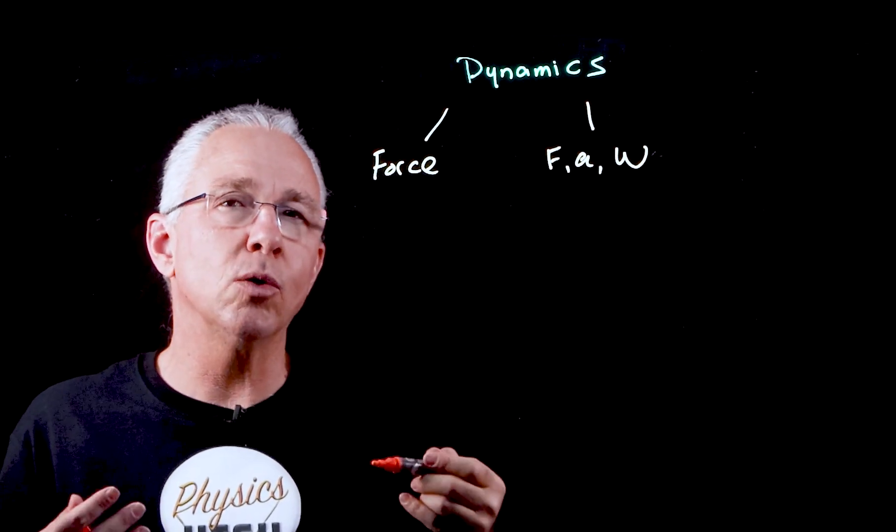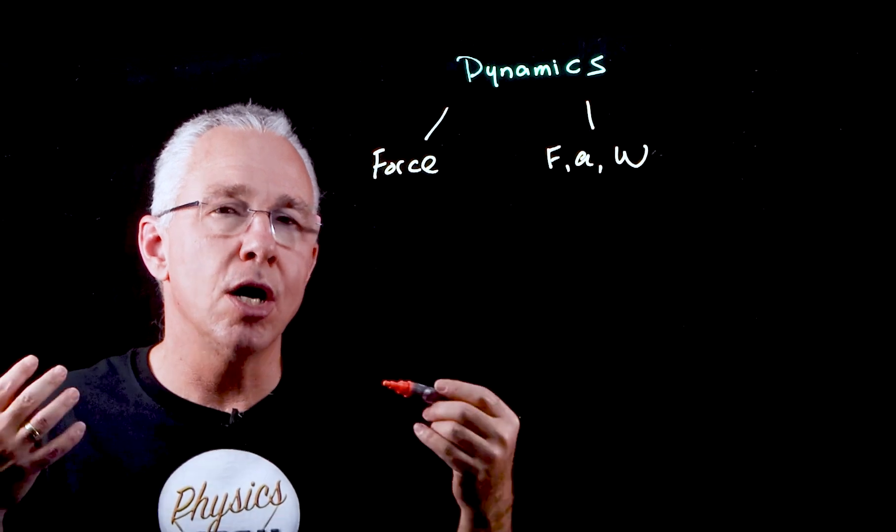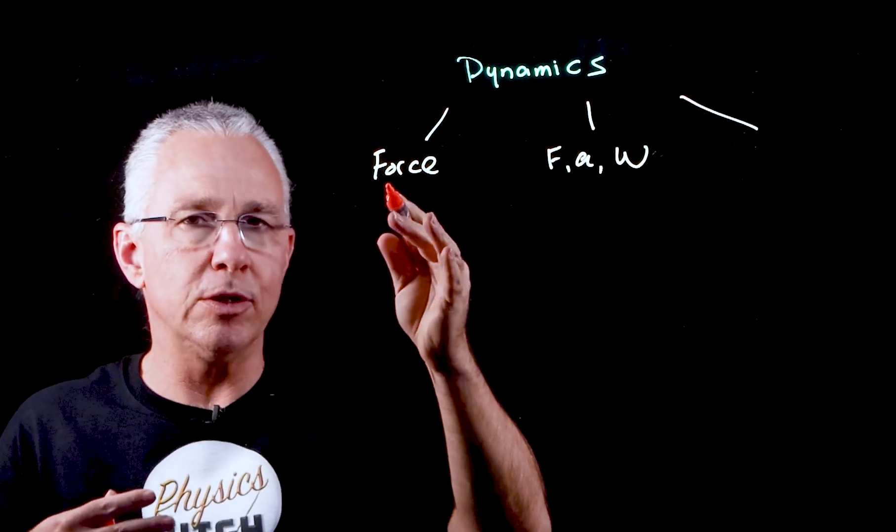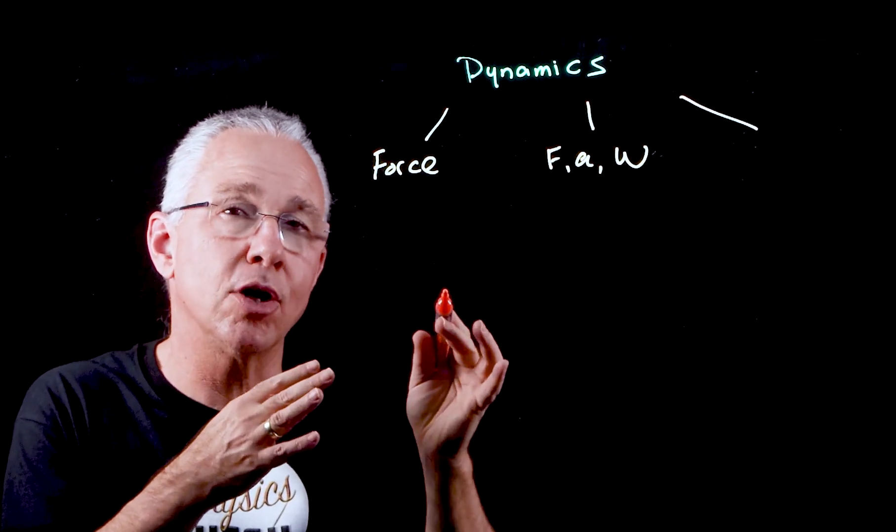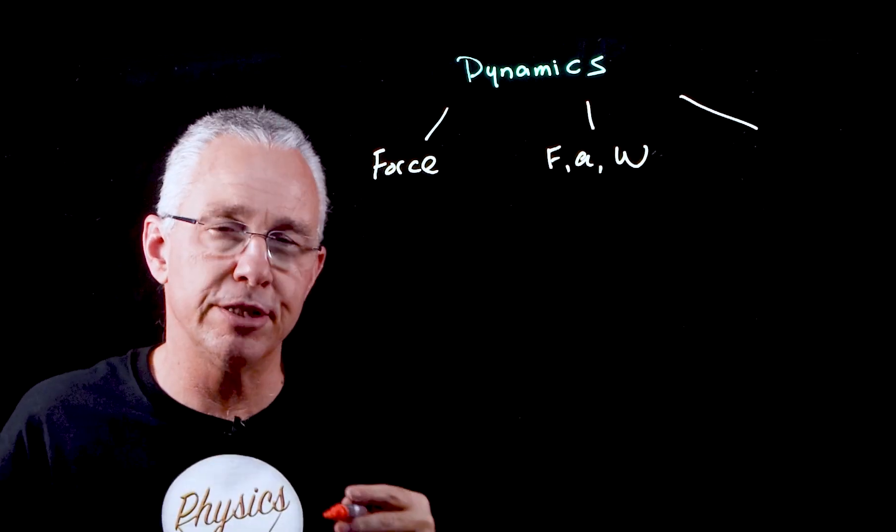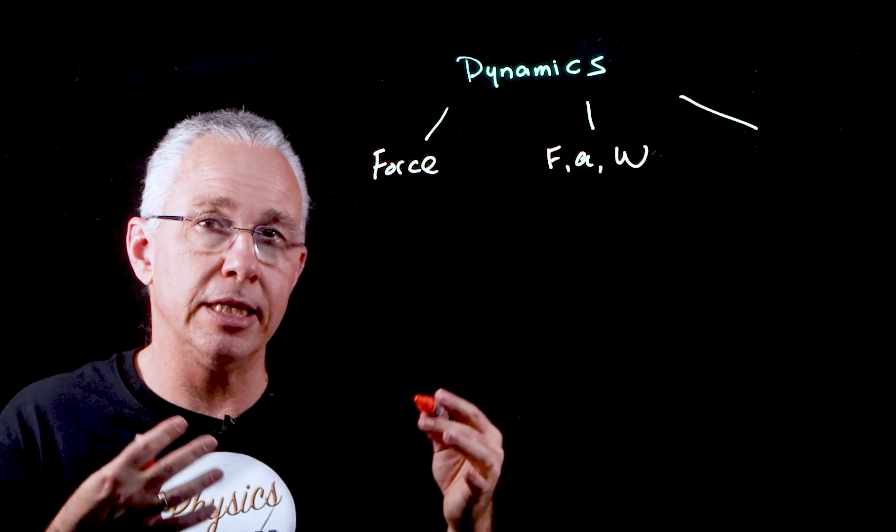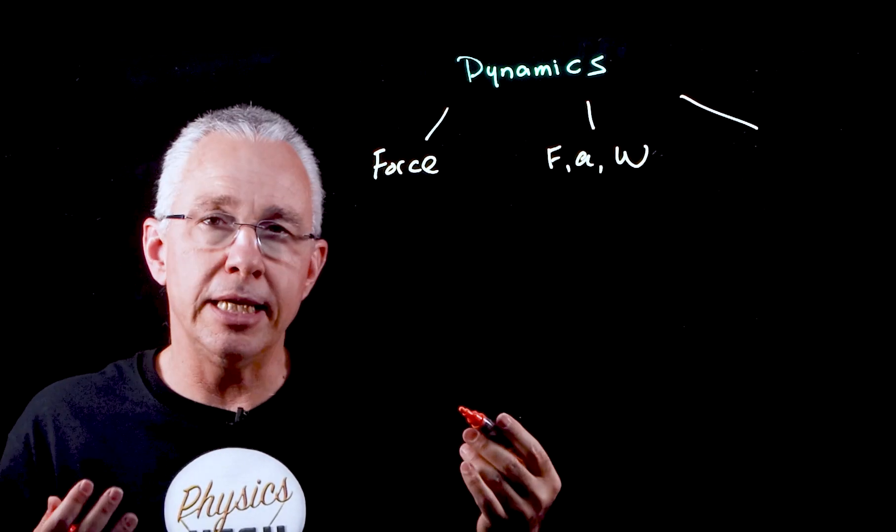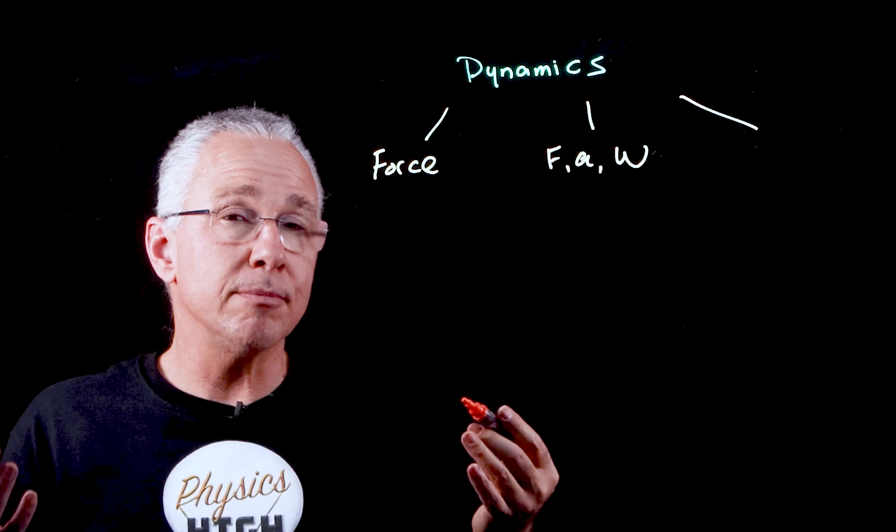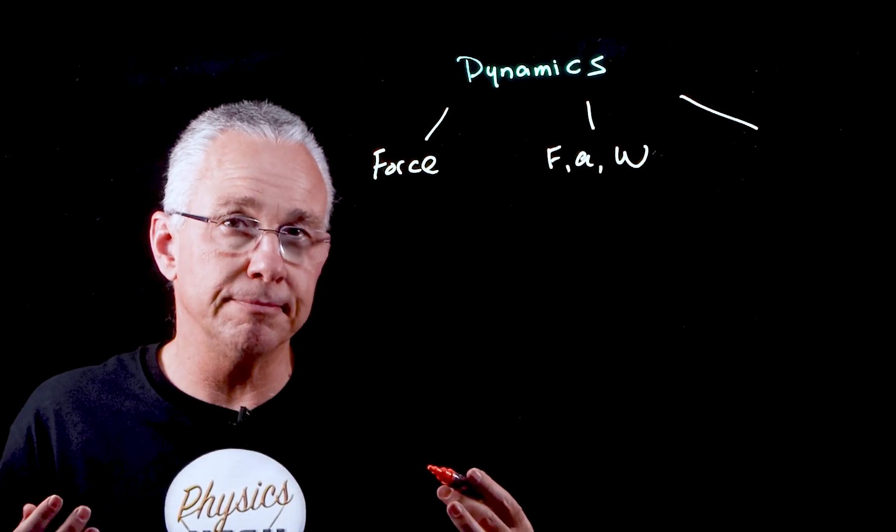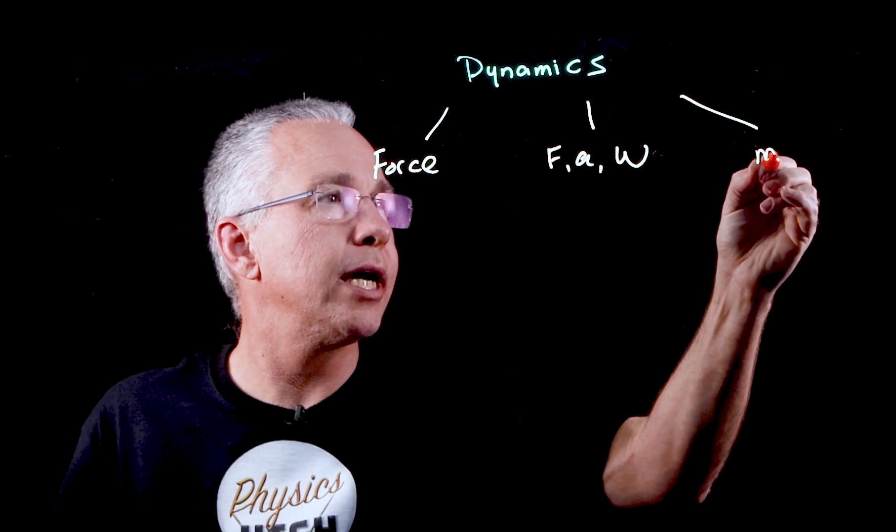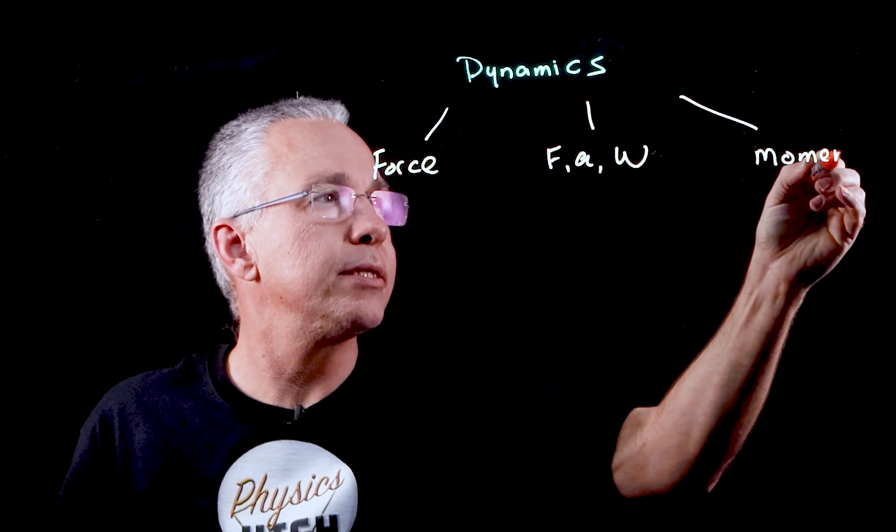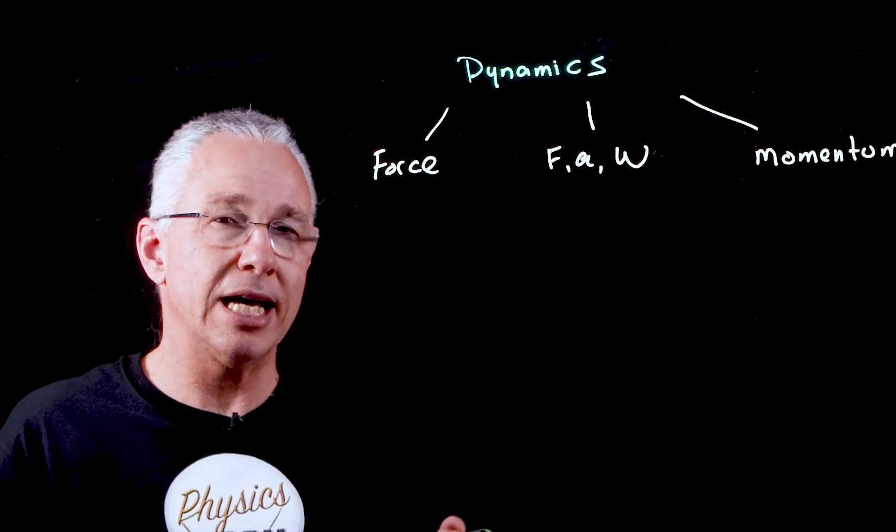And thirdly, we look at the interactions of objects. Whereas here we looked at just understanding force, here we look at understanding how an object might behave with various forces. Now we're interested in multiple objects interacting. And here we are interested in: How is the motion of objects in a simple system dependent on the interactions between these objects? In essence, we are looking at the concept of momentum.